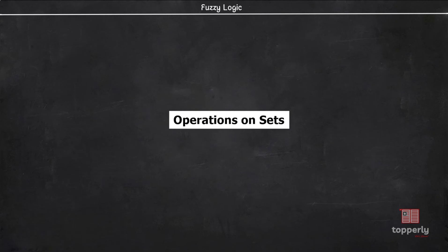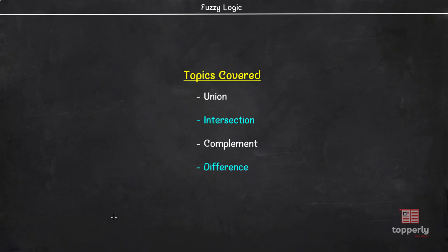Hey everyone, welcome to Fuzzy Logic Lectures. This is the second video in the Fuzzy Logic Lecture series, and in this video we will learn about operations on sets. Specifically, we will learn about union, intersection, complement, and difference operations on both classical and fuzzy sets. We will also see solved examples in each case for better understanding of the topic. So let's start our lecture.